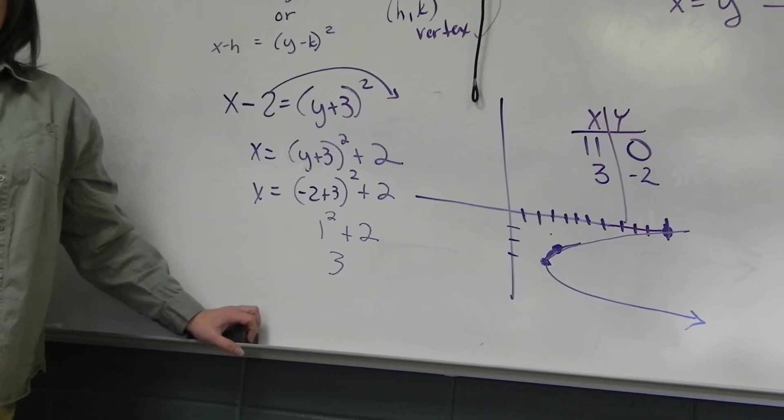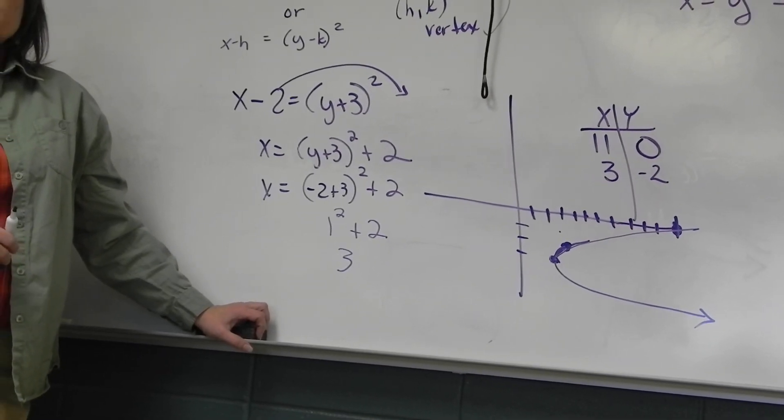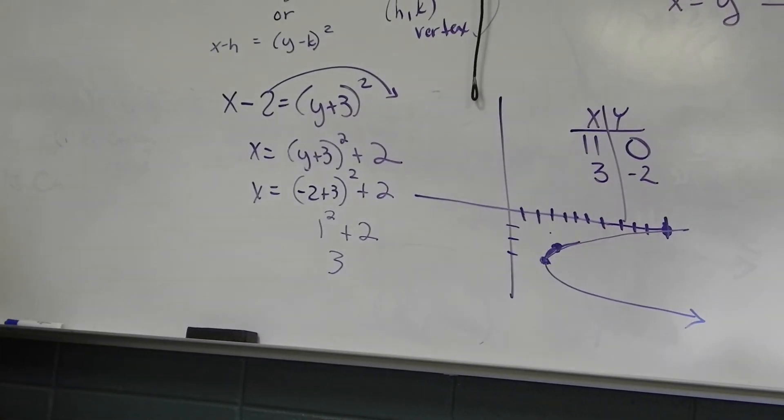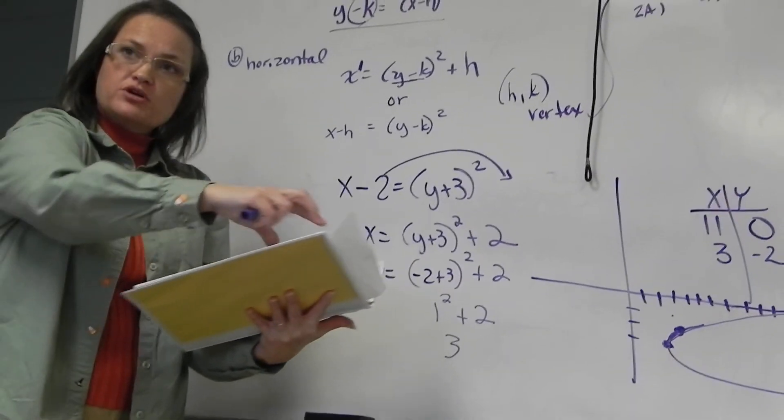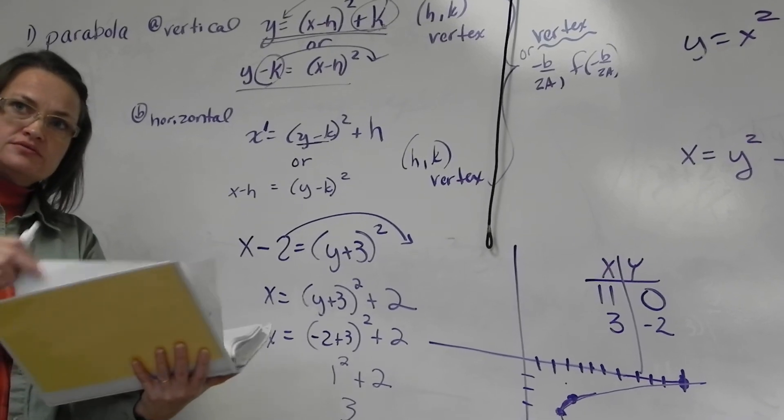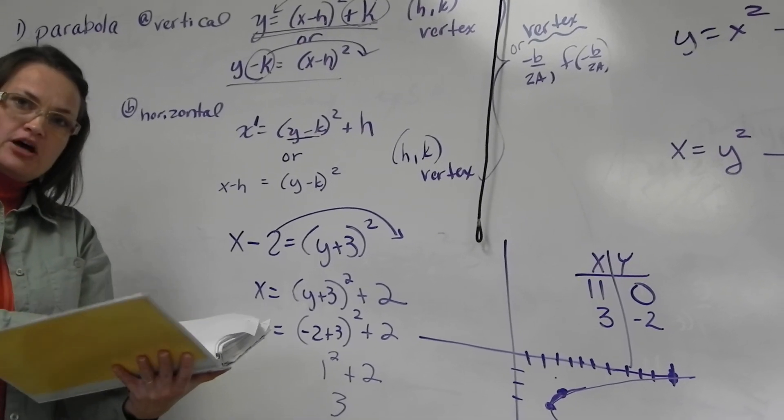So another point I could have used is over 3 and down 2 to be on that curve. Any questions on that? So let's look at some of the homework problems from 6.1. Anybody have a particular one you've already looked at and you have a question about? I'm going to stop it.